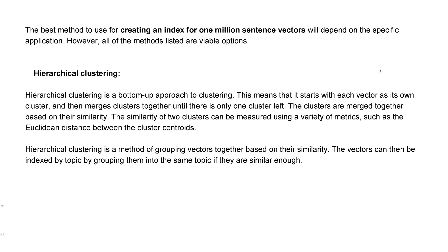For those diving deeper: how do we do data indexing and similarity search in a database system where we store vectors? Let's say we have created one million sentence vectors and we want to avoid comparing one search query vector against one million sentence vectors individually — though it is rather fast, less than a minute on a local laptop. There are four options. First: hierarchical clustering — a bottom-up approach that starts with each vector as its own cluster and merges clusters together based on their similarity measure until there is only one cluster left. You can use any metric: Euclidean distance, cosine similarity, or anything custom-built for your application.